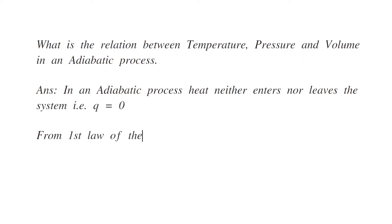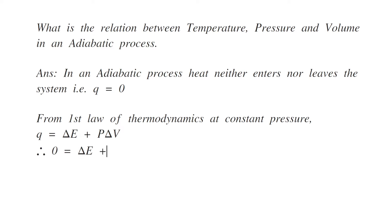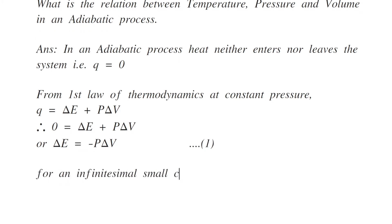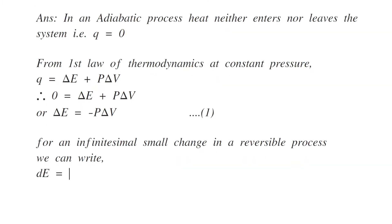From the first law of thermodynamics, Q is equal to delta E plus P delta V. Therefore, 0 is equal to delta E plus P delta V, or delta E is equal to minus P delta V. This is equation number one. For an infinitesimally small change in a reversible process, we can write dE is equal to minus P dV.